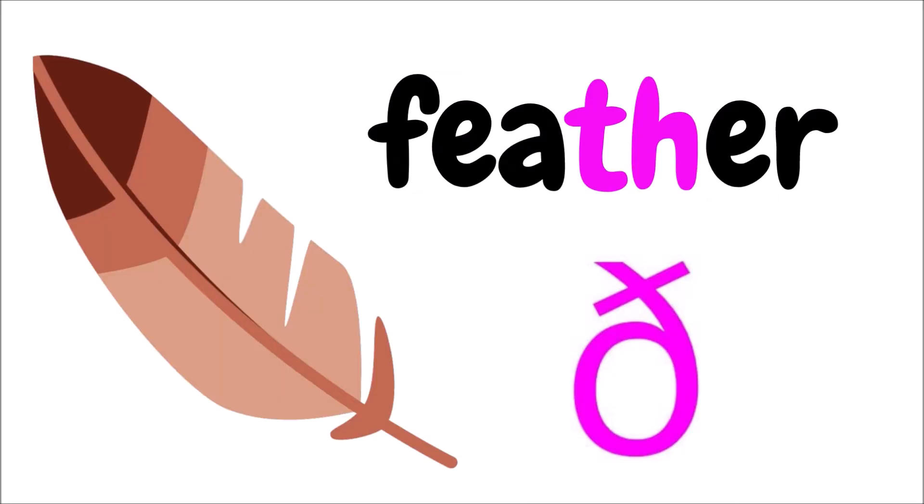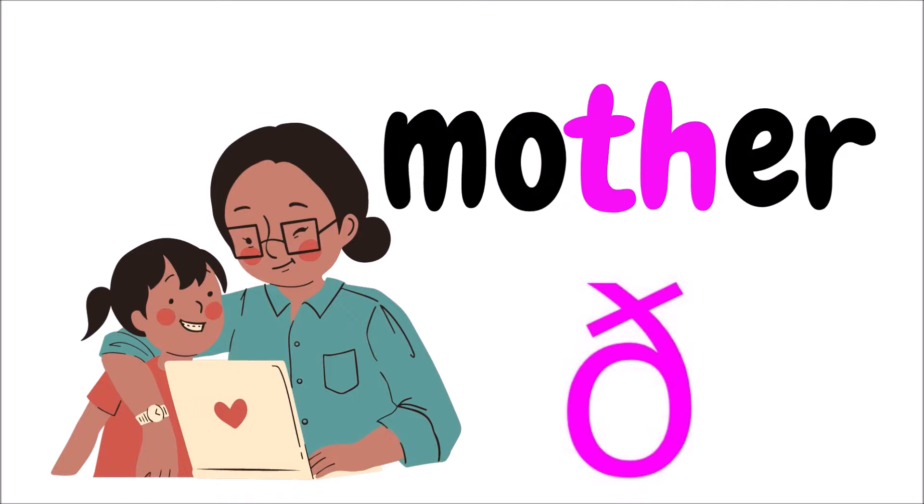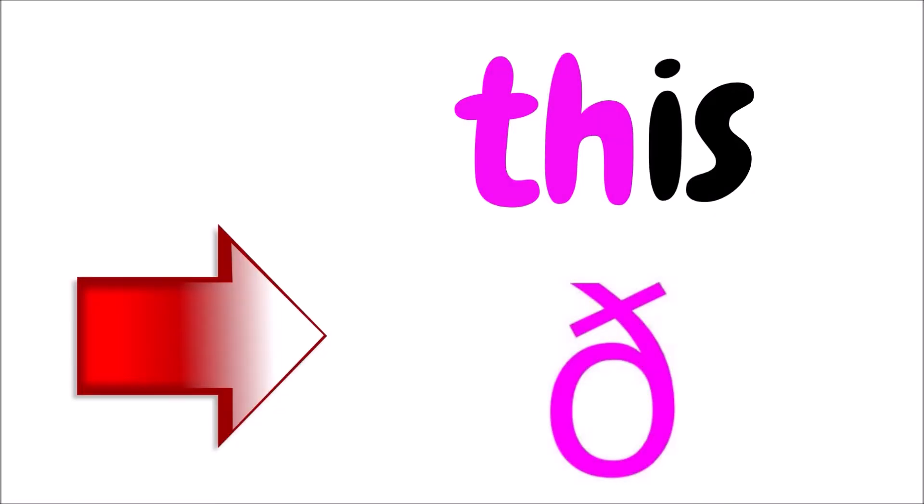To make the ð sound, you have to stick your tongue out between your teeth. Your teeth don't touch your tongue but come close, and you blow air out around your tongue and use your voice box to make the sound. Let's take a look at some words with the ð sound in them: feather, mother, this.